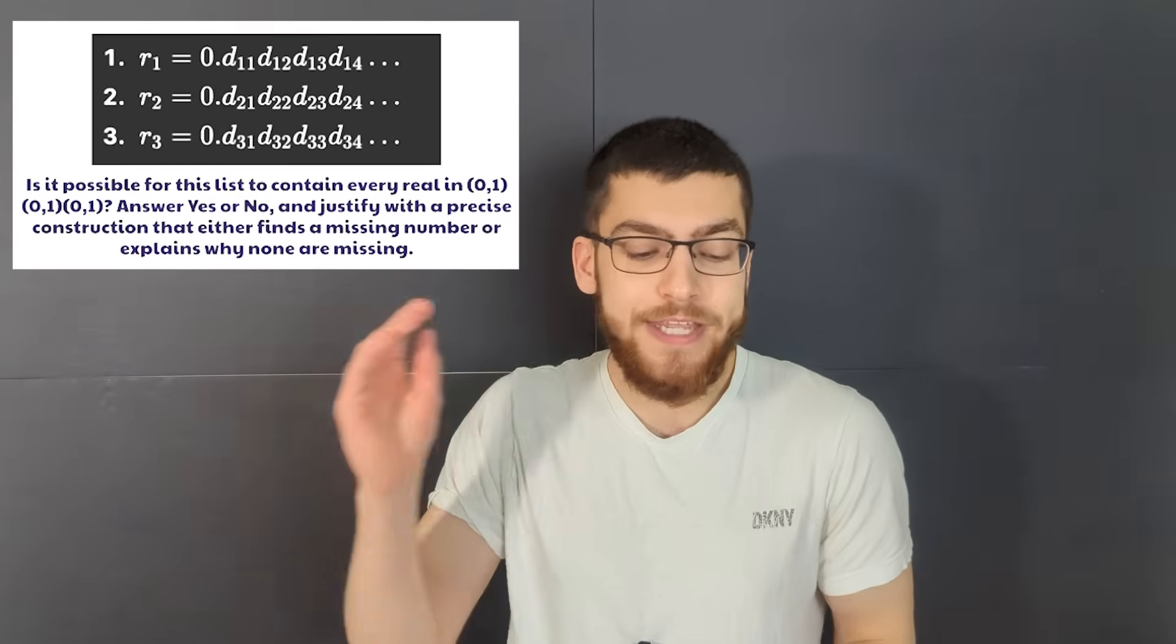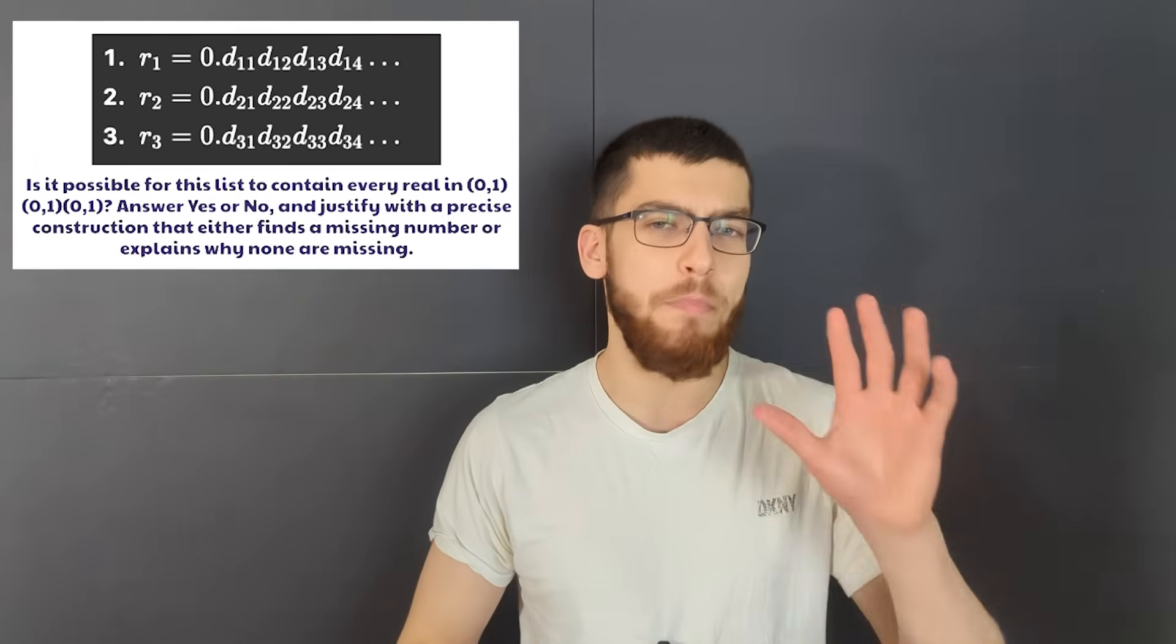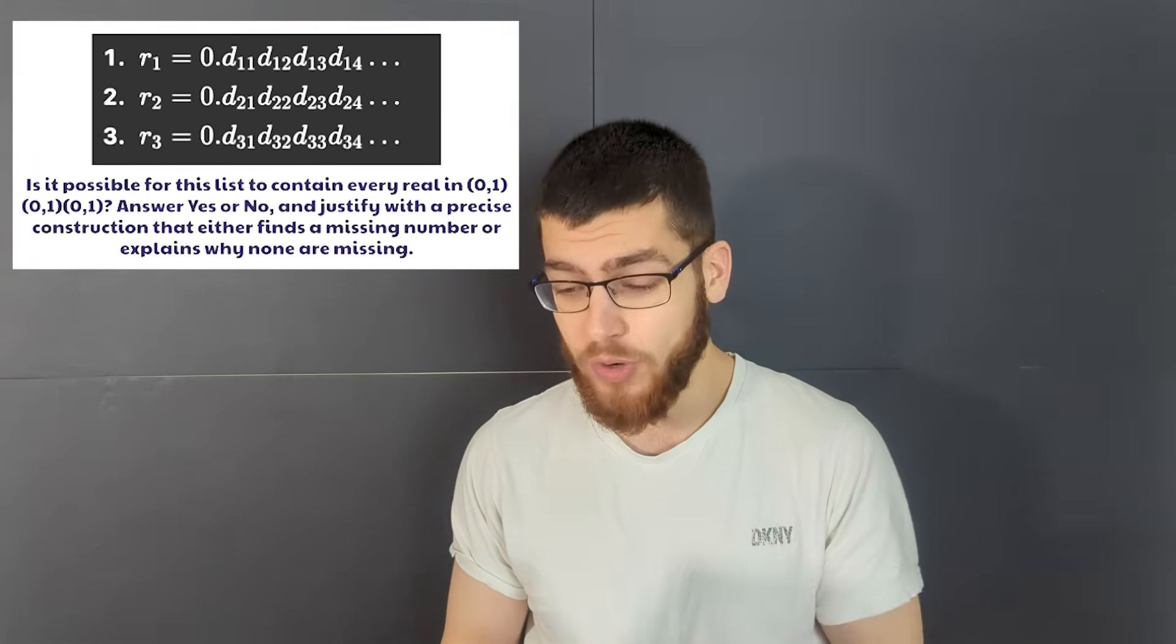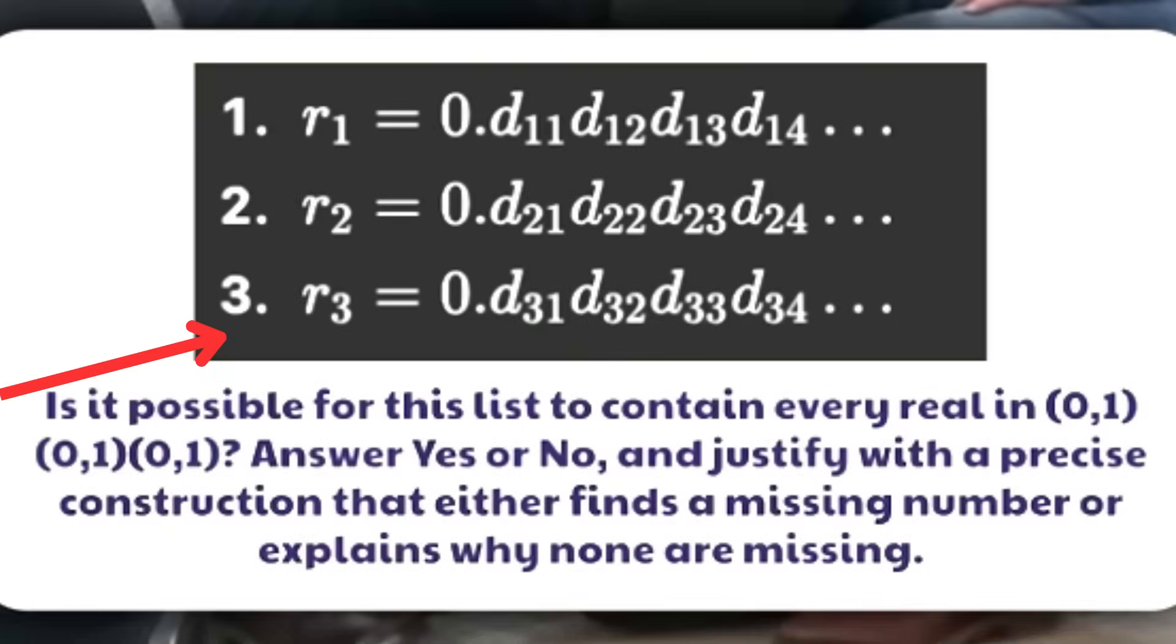Now this question looks really hard, but it's actually a lot simpler than you might think if you recognize what it's talking about. This is called Cantor's diagonal argument, and the question is stated in a very poor way. I think they've cropped too much out and they've definitely used ChatGPT—I can recognize by the font and by the fact that the interval zero to one is repeated three times. Only ChatGPT does that.